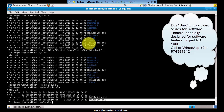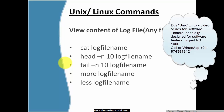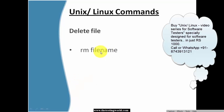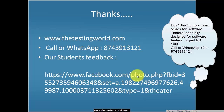We have seen a few basic commands for working with files. We can create a new file using the touch command without any data, or use the cat command to create a file with content. We can view file content using five commands: cat, head, tail, more, and less. We can delete a file using rm, copy a file using cp with source and destination, and move a file using mv with source and destination. Thanks for watching. For more information visit www.thetestingworld.com or call or WhatsApp us at 8743-913121.